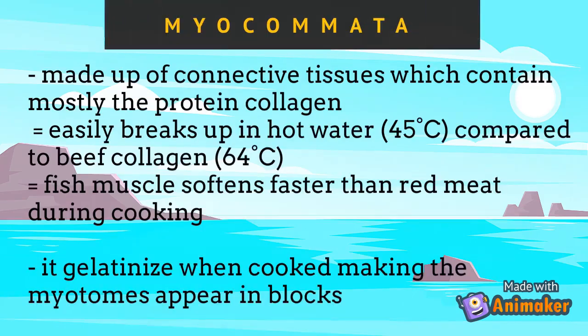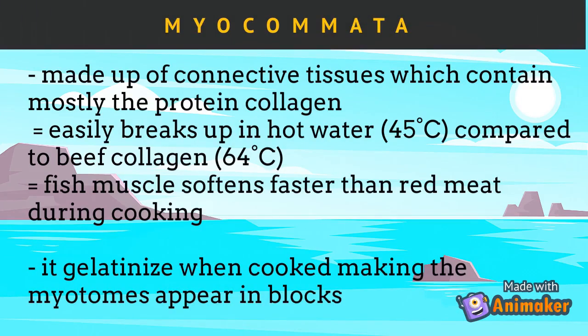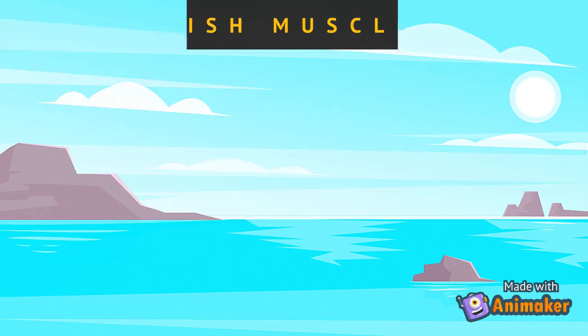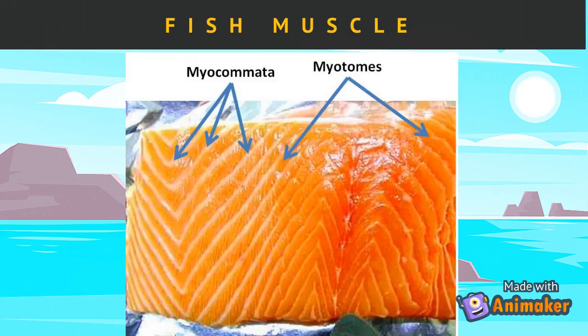Myocomata are made up of connective tissues which contain mostly the protein collagen. It easily breaks up in hot water around 45 degrees Celsius, compared to beef collagen at 64 degrees Celsius. The fish muscle softens faster than red meat during cooking and it gelatinizes when cooked, making the myotomes appear in blocks. The myocomata or collagen of fish differs by group: bony fish have three percent collagen in the body, while cartilaginous fish have as high as 16 percent. Collagen is also present in the perimysium, which envelops the muscle bundle, and the endomysium, which encloses the muscle cell or fiber. This figure shows the appearance of myotomes and myocomata in salmon.